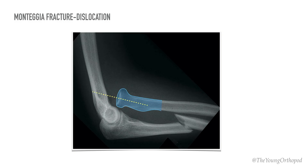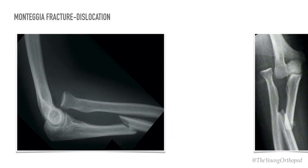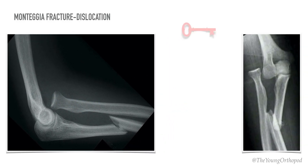Type 1 Monteggia is the most common type and is usually asked in exams. It involves anterior dislocation of the radial head with fracture of the ulnar diaphysis with anterior angulation. Type 1 Monteggia results from forced pronation of the forearm.